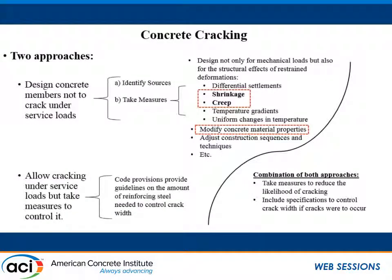There are generally two approaches taken in design with respect to concrete cracking. The first approach is to design concrete members not to crack under service loads. To do that, one has to identify the sources and causes of cracking and take measures accordingly. These measures include designing not only for mechanical loads but also for the structural effects of restrained deformations, such as differential settlements, shrinkage creep, temperature gradients, and uniform changes in temperature. Other measures may include modifying concrete material properties, adjusting construction sequences and techniques, and so on. The second approach is to allow cracking under service loads but to take measures to control it. Code provisions already provide guidelines on the amount of reinforcing steel needed to control crack widths.